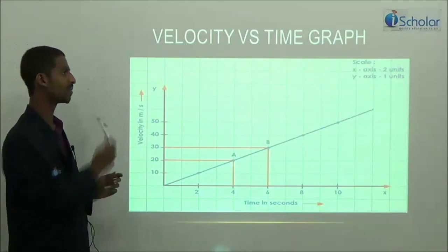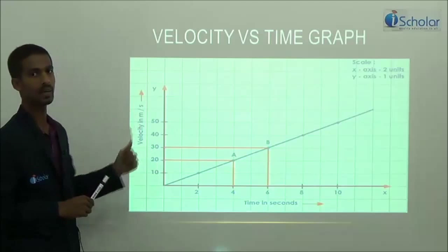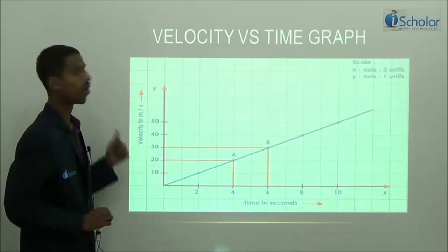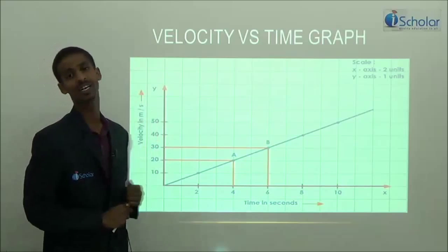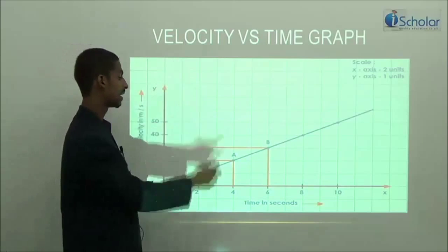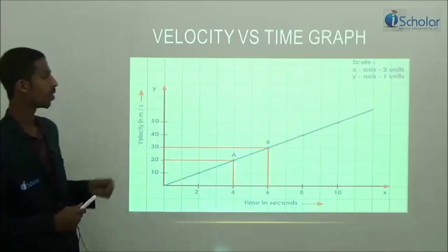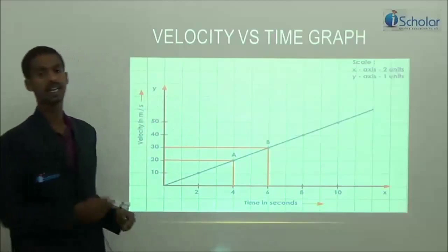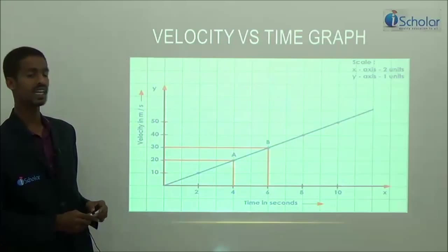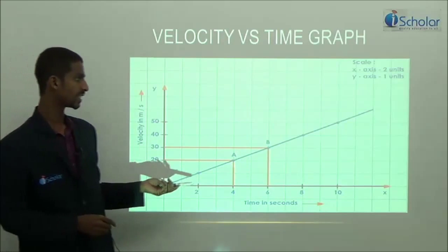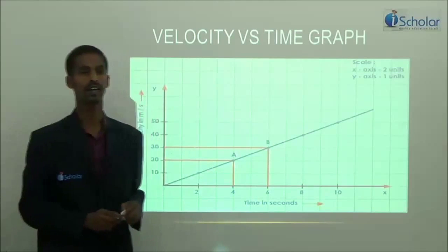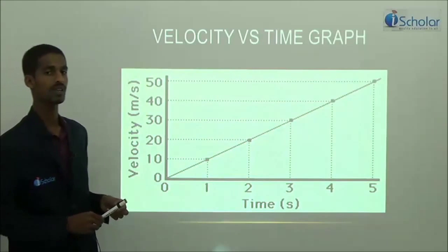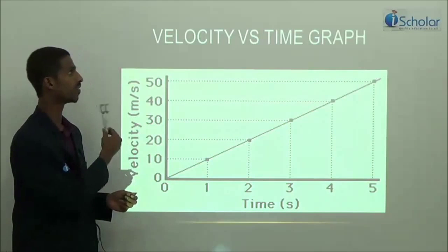Now coming to the velocity-time graph. Here we have velocity on the y-axis as the dependent variable and time on the x-axis. This is a linear velocity-time graph, and you can say the acceleration is constant along the line.